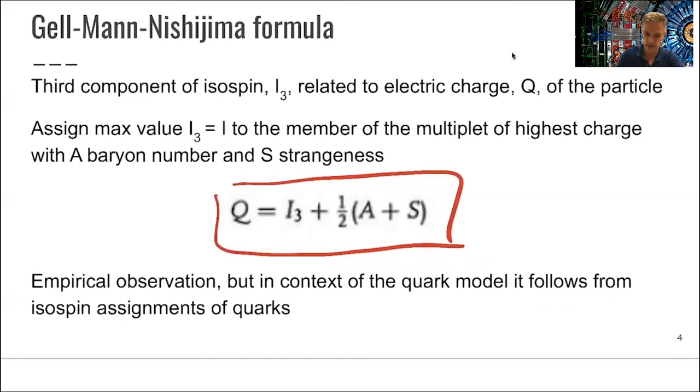So if you just look at this as, for example, for this pion case, we had the isospin equal 1, baryon number equal 0, strangeness equal 0, which follows that the maximum charge involved is 1, which is the charge of the positively charged pion.